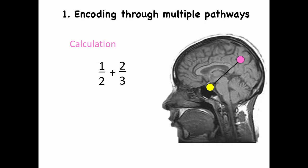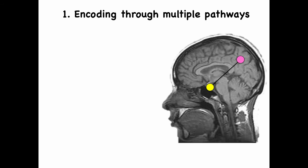One way that we can do this is by presenting the same information through different systems in the brain. Fractions are displayed through visual models. In this example, we have a number line and fraction bars, and these are known to be highly effective in teaching fractions.